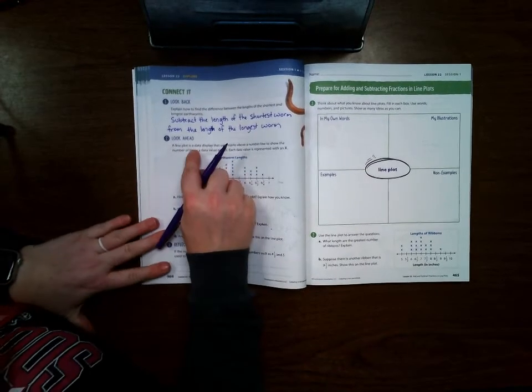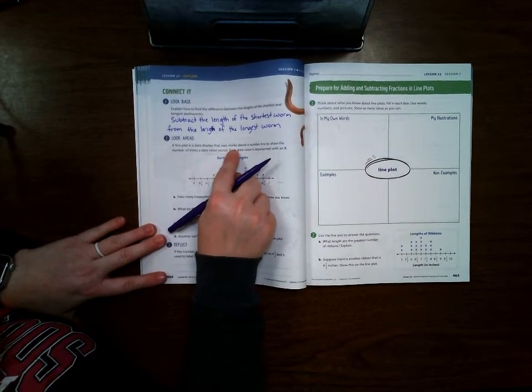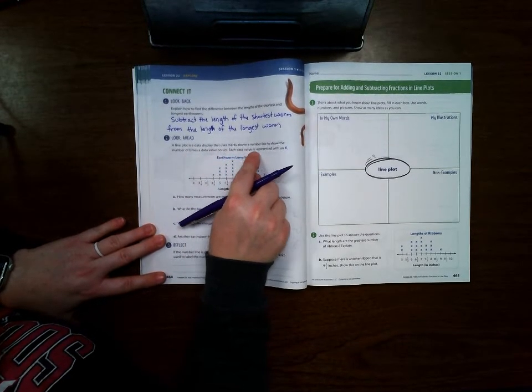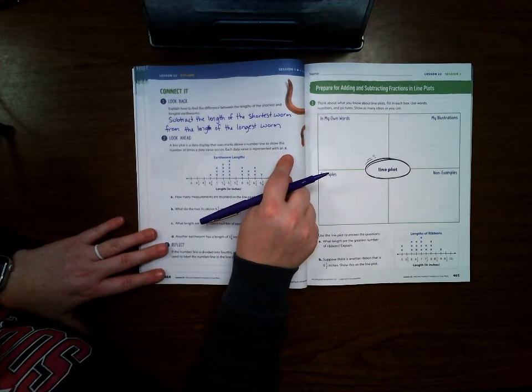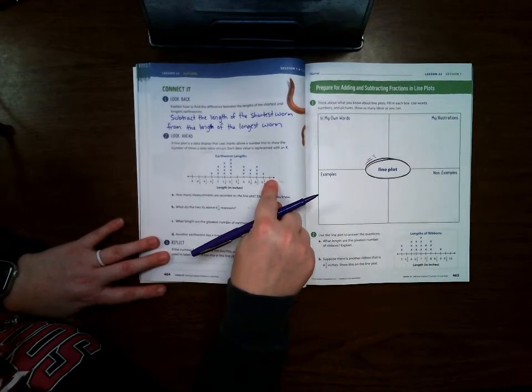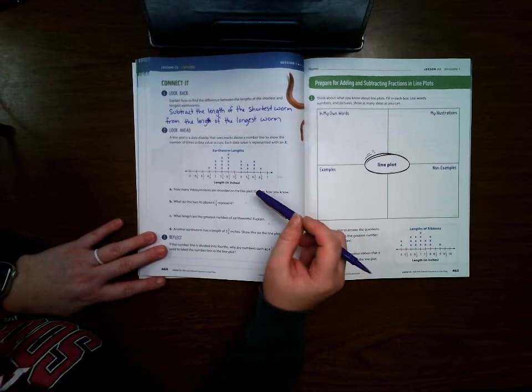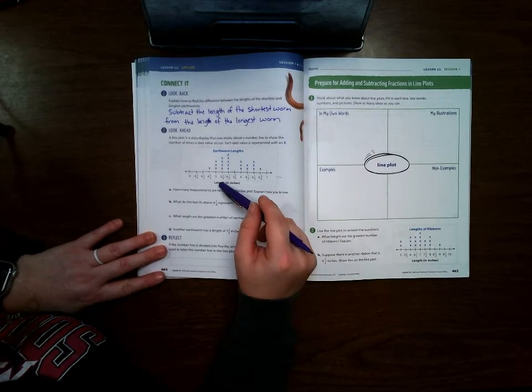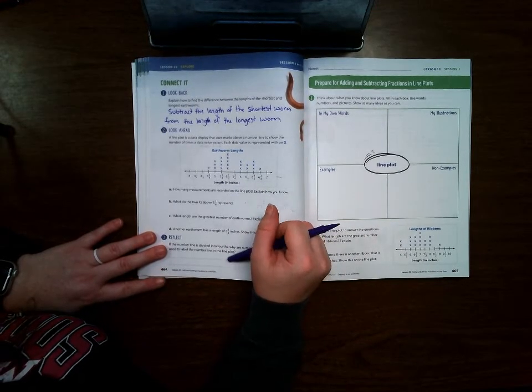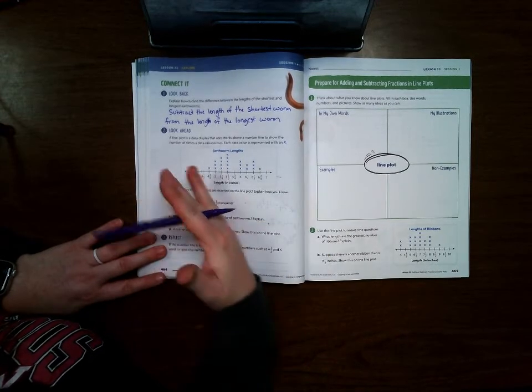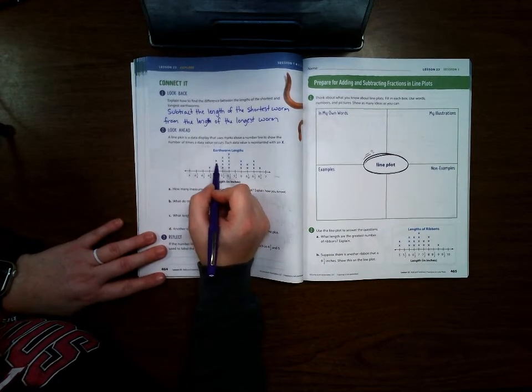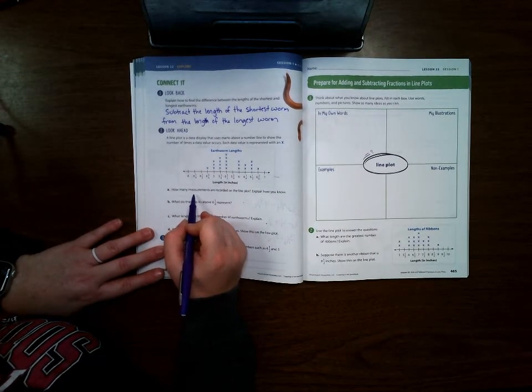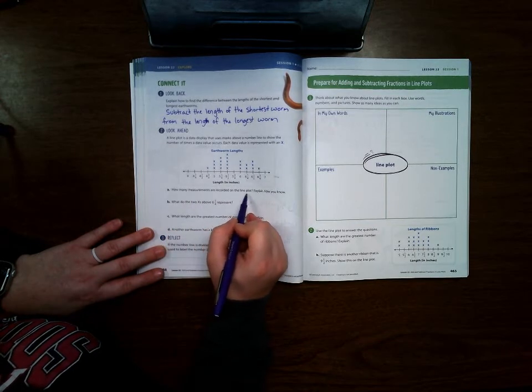Look ahead. A line plot is a data display that uses marks above a number line to show the number of times a data value occurs. Each data value is represented with an x. So in third grade, you should have learned how to make these line plots. And so now in fourth grade, we're learning how to interpret the data with them, adding and subtracting things and just using it in different ways.